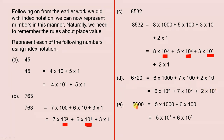5600 is 5 times 1000 plus 6 times 100. We have zero in the tens column and zero in the ones column. So it's 5 times 10 cubed plus 6 times 10 squared.